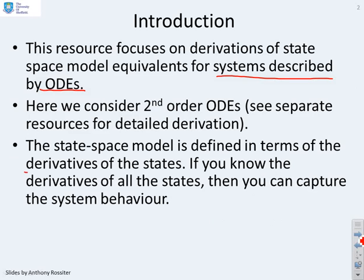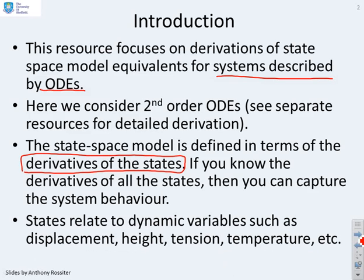Now a state-space model is defined in terms of the derivatives of the states. So the argument is that if you know the derivatives of all the states, then you can capture the system behavior. Now the states relate to dynamic variables such as displacement, height, tension, temperature and so forth.